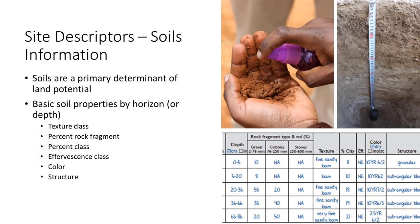The soils at a site are one of the primary determinants of land potential and the type and amount of vegetation that can occur at a site. Because monitoring data need to be analyzed and interpreted relative to the land's potential, having good soils data collected from the site is important for studies and monitoring programs. Collection of soils data does not need to be complex, but it does mean that, one, you have to have some basic training and skill in collecting soils data, and two, yes, you need to dig a soil pit. Typically, data are collected by soil horizon or depth for soil texture class, percent rock fragment, percent clay, effervescence, color, and structure. And while this may seem like a lot of work, the value of the soils data you will get from it will be worth it.